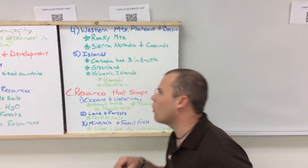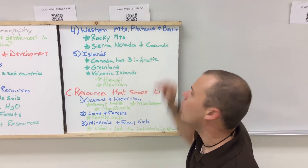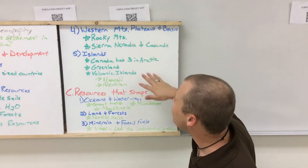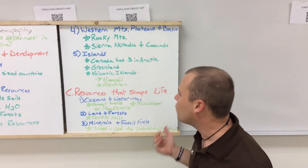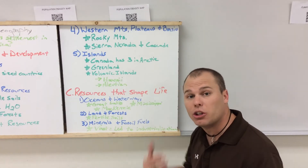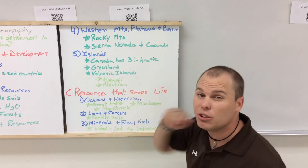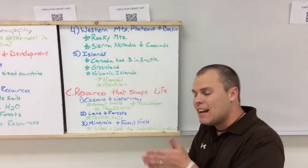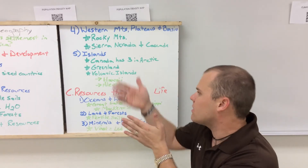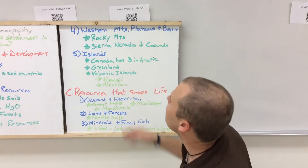Next are the western mountains, plateaus, and basins. A plateau is flat on top with steep sides; basins are flatter areas between mountains. The Rocky Mountains in the west are very rugged and younger than the Appalachian Mountains because there's less erosion. The Rocky Mountains also contain the continental divide, which is where rivers switch from flowing east to west versus west to east toward the oceans.